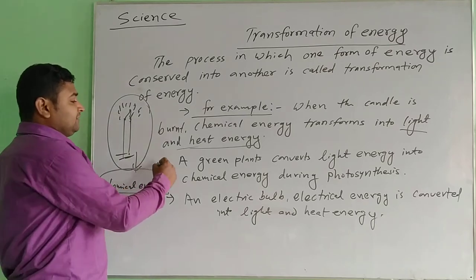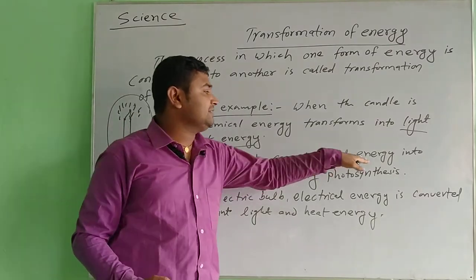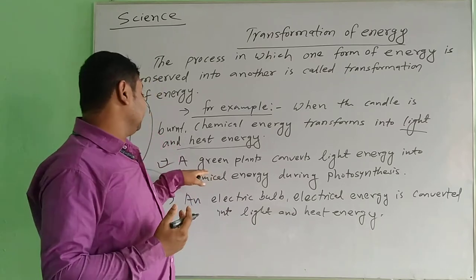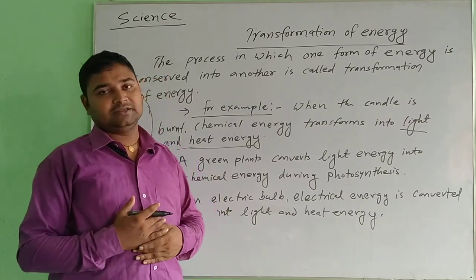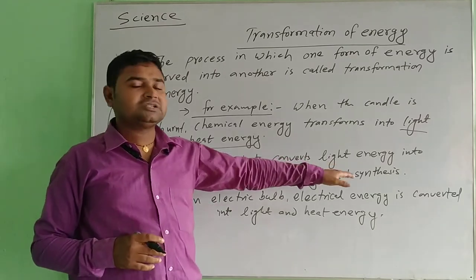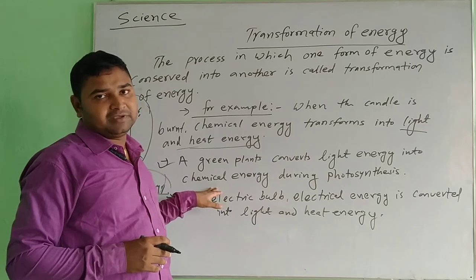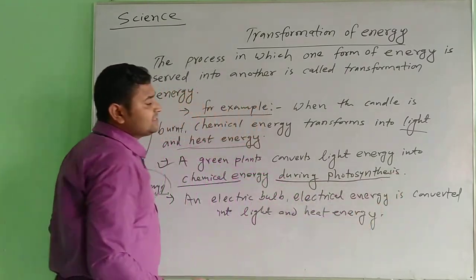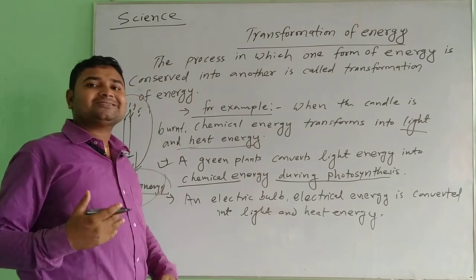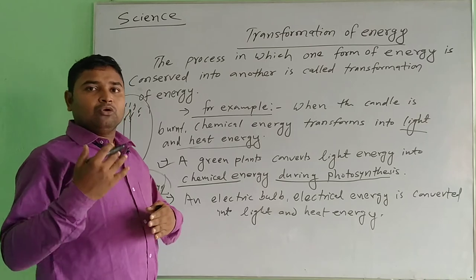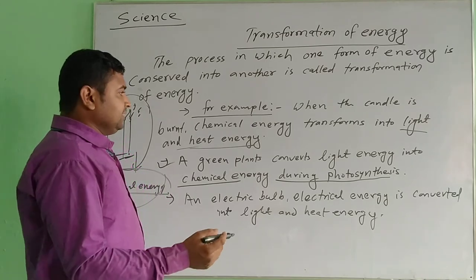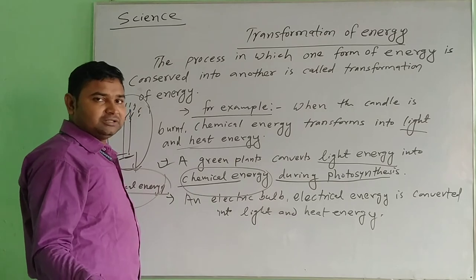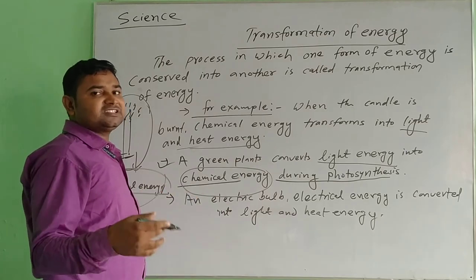Another example: a green plant converts light energy into chemical energy during photosynthesis. In the green plants, light energy converts into chemical energy. This means the energy is transforming — converting from one form to another form. This is the transformation — the transfer of energy.